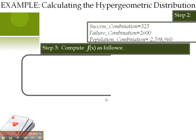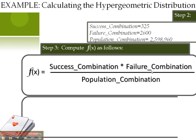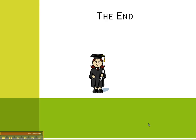Finally, step three has been easy. Simply put all this information together. Multiply your answer, multiply success combination by failure combination, divide your answer by population combination. And now, you have the resulting hypergeometric distribution. Congratulations! You can now do a hypergeometric distribution.